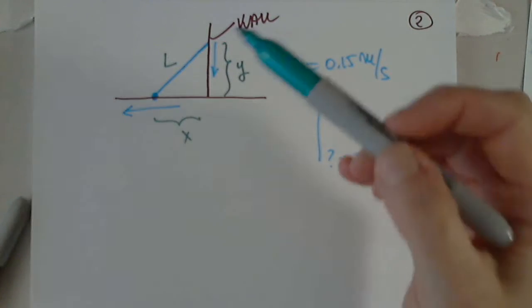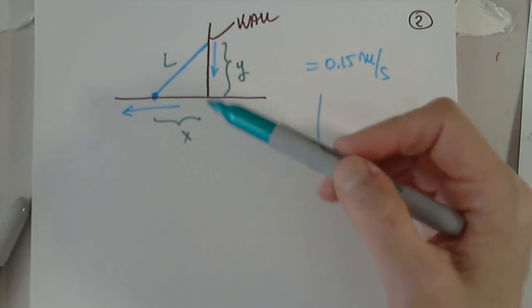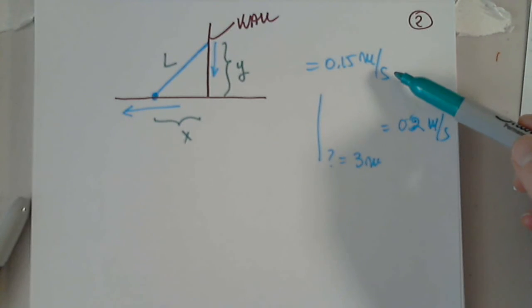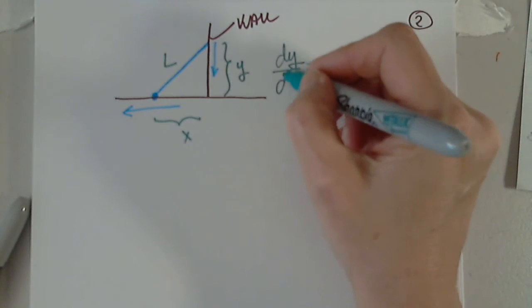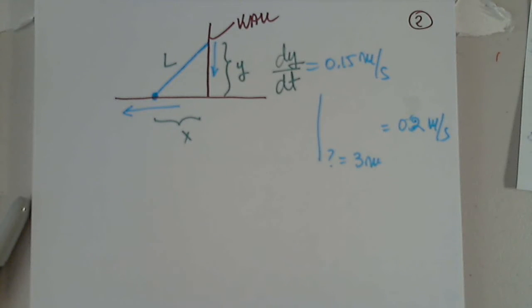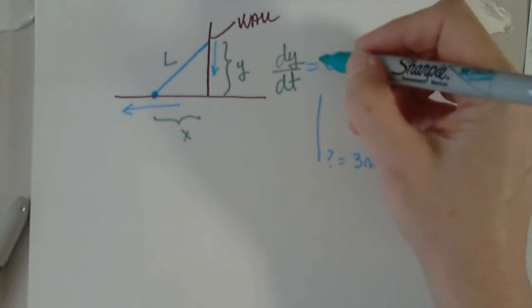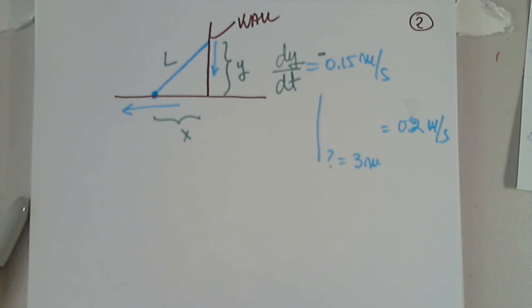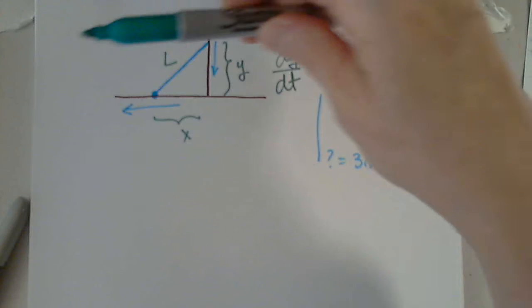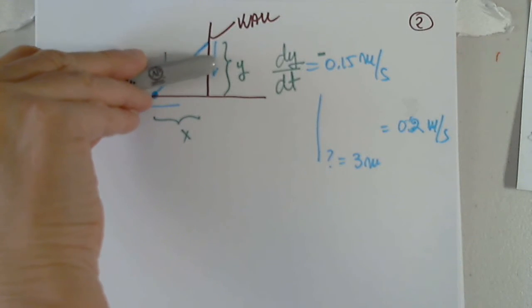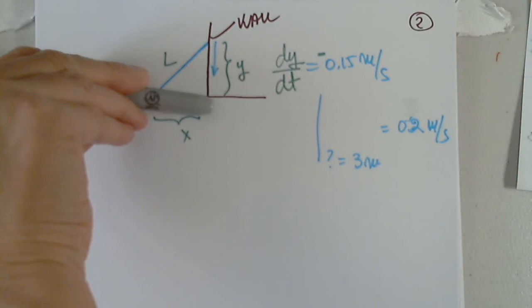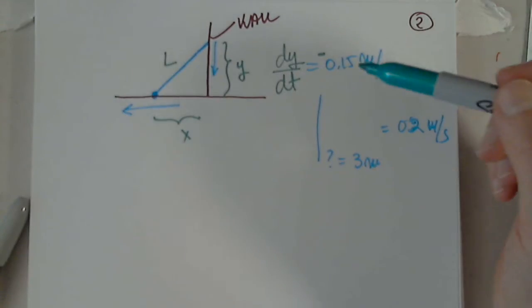Let's read the problem one more time. The top of the ladder slides down a vertical wall at a rate of 0.15 meters per second, so obviously this must be dy/dt. And since it is decreasing, the distance is decreasing, I have to consider this a negative number. As you see, as the ladder slides down, y decreases. So that means that dy/dt is a negative number.